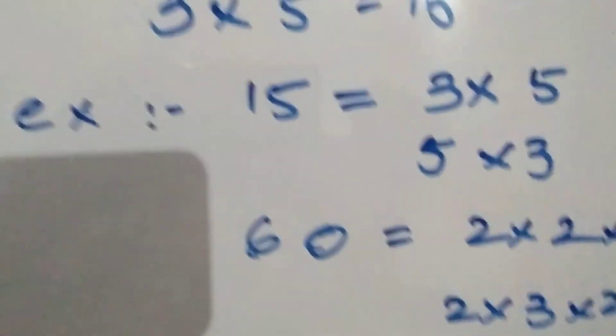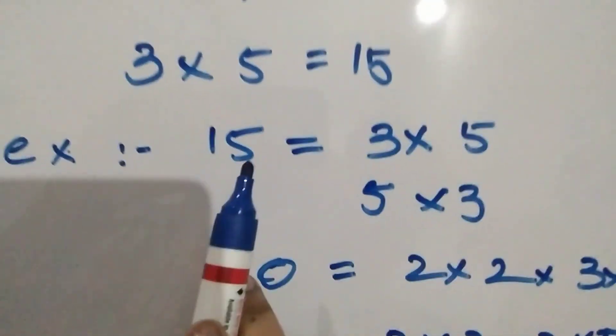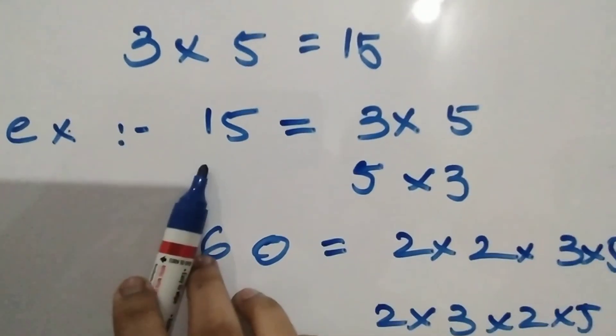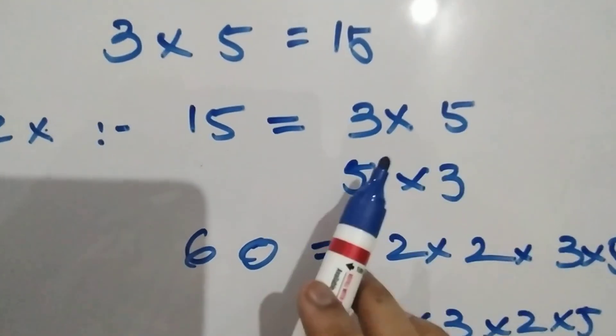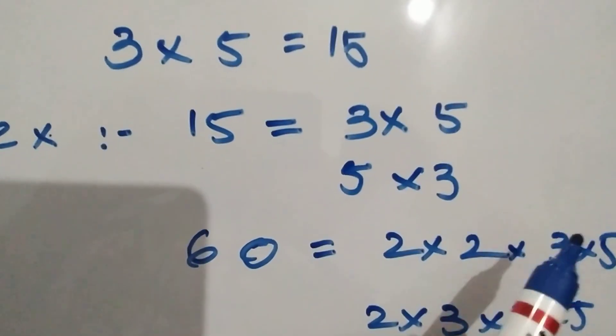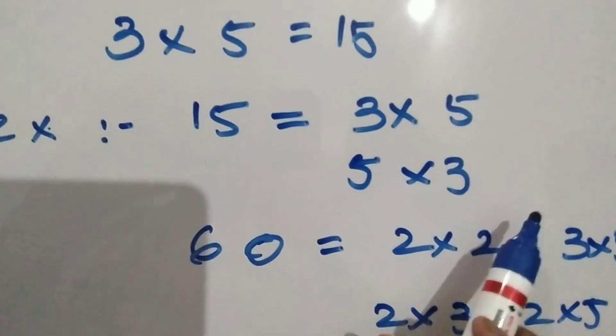So here's a definition of fundamental theorem of arithmetic. Every composite number can be factorized as a product of prime numbers in a unique way apart from the order.